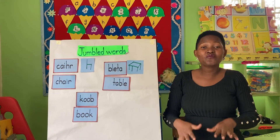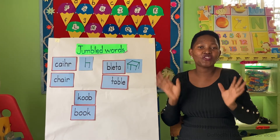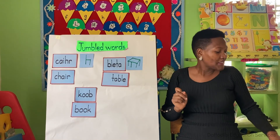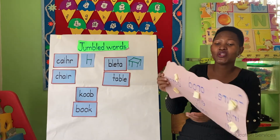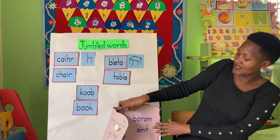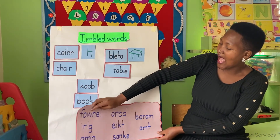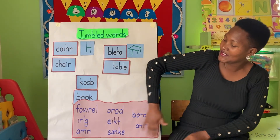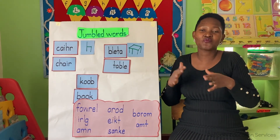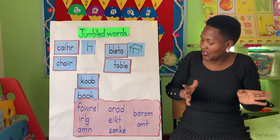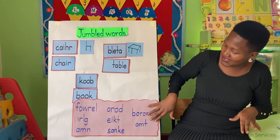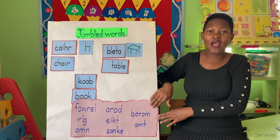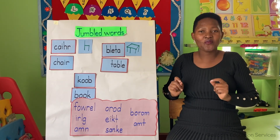So now, since we all know that jumbled words are words which are mixed up and they're wrong, and our job is to write them correctly — teacher has some work that we are going to do. All these are jumbled words and we are going to write them correctly. Teacher is just trying to trick you to see if you can really tell which word it is. So we are going to get our books, write these words down, and then we shall write them correctly.